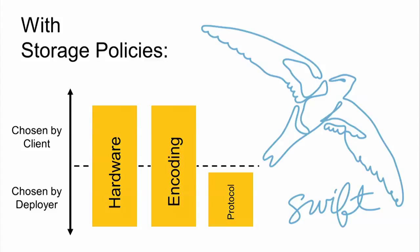With storage policies, besides bringing some really interesting technical ideas, we're increasing the modularity and extensibility of an already successful system. This diagram gives you a couple of different perspectives on where the knobs are that you can tune with storage policies and with other features recently added to Swift, like disk file. Pete has a design session this week on disk file architecture — that would be a good one to check out if you're on the design side.